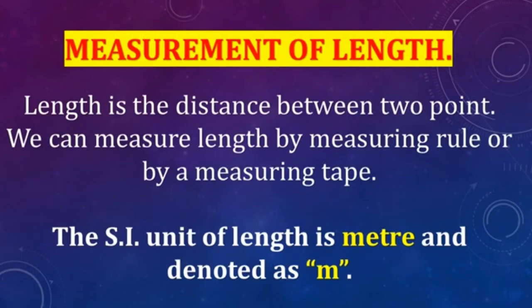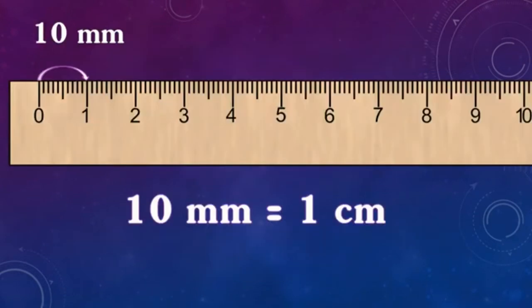First we discuss measurement of length. Length is the distance between two points. We can measure distance by a measuring rule, measuring tape, or scale. The SI unit of length is meter, denoted as m. In a 10 centimeter scale, the distance from 0 to 1 is 1 centimeter. The small spacing of 10 lines equals 1 millimeter, so 10 millimeters equal 1 centimeter.